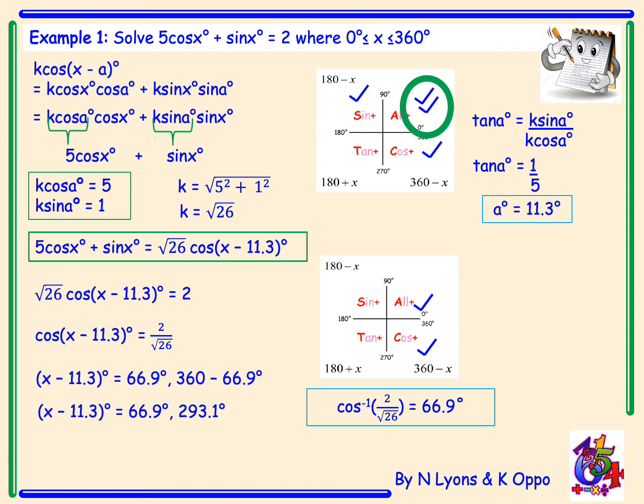However we were asked to find x. So x take away 11.3. So we need to move the 11.3 over and add to give x is 66.9 degrees plus 11.3 degrees and 293.1 degrees plus 11.3. Final answer for x is 78.2 degrees and 304.1 degrees.